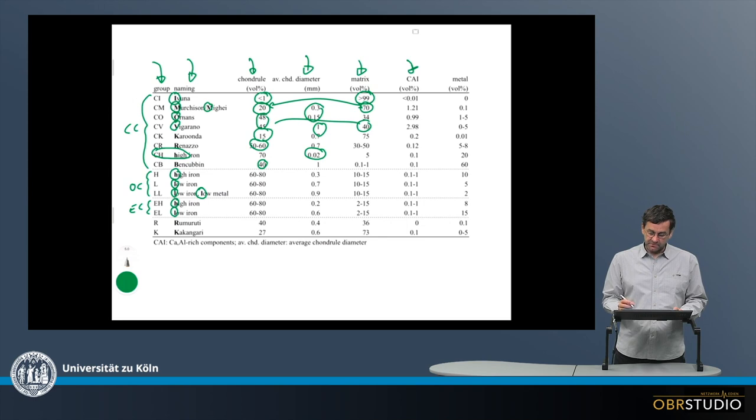And CAI abundances are rather low. So the calcium-aluminum-rich inclusions, because calcium and aluminum is rare in the chondrites. It's about an order of magnitude below magnesium and silicon. Magnesium and silicon produce olivine, pyroxene, and also feldspars. And calcium and aluminum abundances are about an order of magnitude below magnesium and silicon, which is why CAI abundances are also roughly an order of magnitude below.